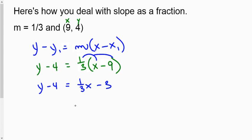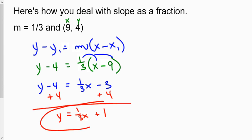Now, thankfully, because we don't have a weird fraction, we can simply add 4 to both sides and be done with a very limited amount of work. And there's our equation for the line that has a slope of 1 third and goes through the point (9,4).